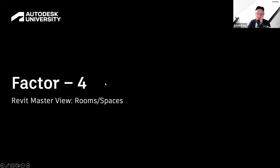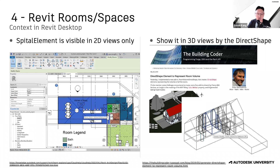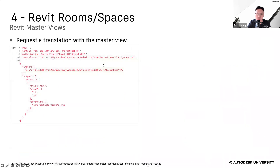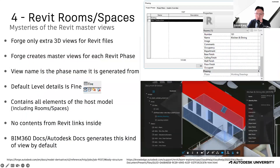The last feature is the Revit Master View — it's about Revit rooms and spaces in Forge Viewer. Revit rooms or spaces are only visible in Revit 2D views, not in 3D. In the past, we needed to create 3D solids for rooms or spaces using the Revit API DirectShape. Now we can simply show rooms by configuring a Generate Master View option in the POST body like this.